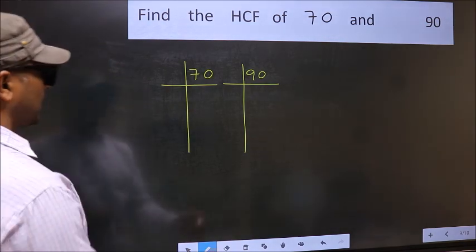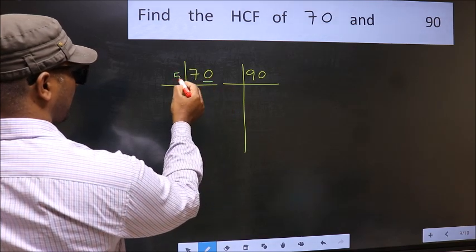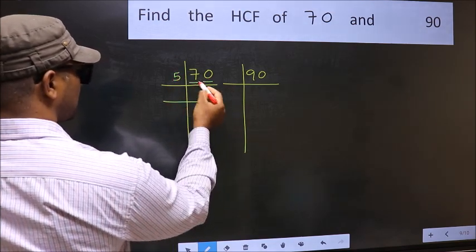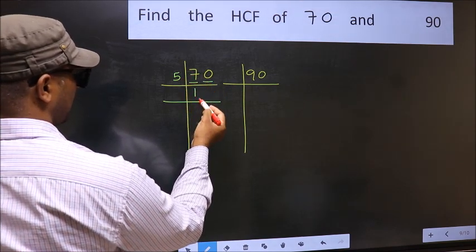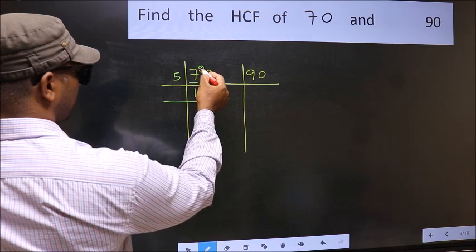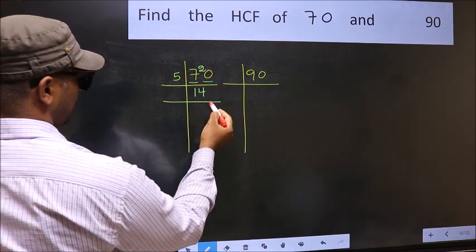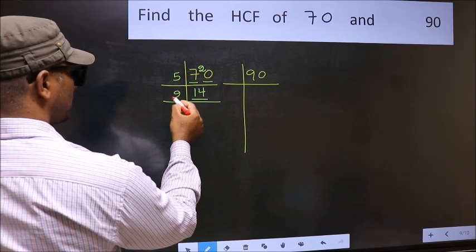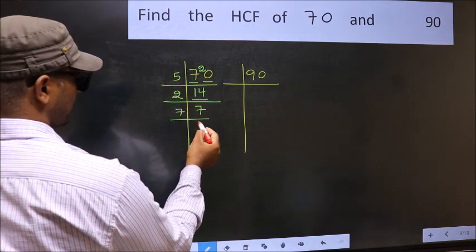Next, in this number, last digit is 0 so take 5. First number 7. A number close to 7 in phi table is 5 once 5. 7 minus 5, 2, 2 carried forward 20. When do we get 20 in phi table? 5 fourths 20. Now 14 is 2 sevenths 14. 7 is a prime number so 7 once 7.